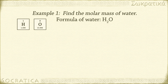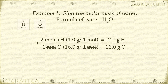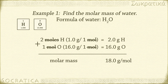In one mole of water molecules, there are two moles of hydrogen atoms times 1.0 grams of hydrogen per one mole of hydrogen — moles cancel — equals 2.0 grams. And one mole of oxygen times 16.0 grams of oxygen per one mole of oxygen — moles cancel — equals 16.0 grams. We add them together and get 18.0 grams per mole. That's the molar mass of water. We can also call this the gram molecular mass of water.